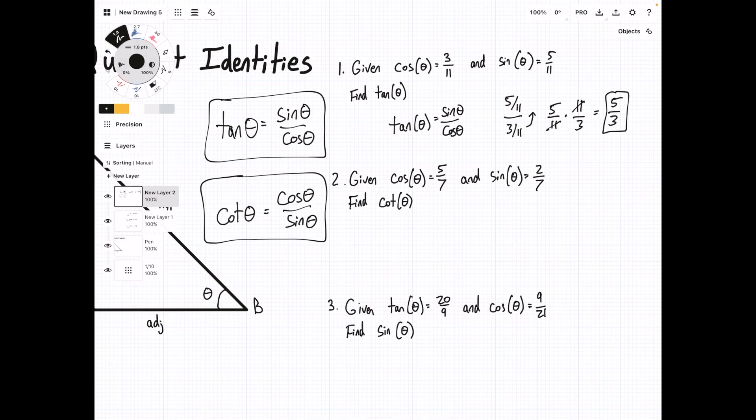The second problem: given cos θ equals 5/7 and sin θ equals 2/7, find cot θ. We have our formula here, so cot θ equals cos θ over sin θ, which is 5/7 over 2/7. The 7s cancel, and we have 5/2 for cot θ.